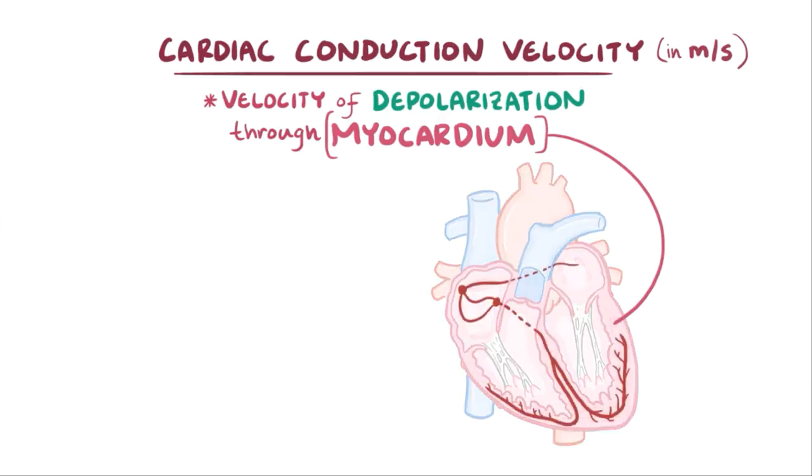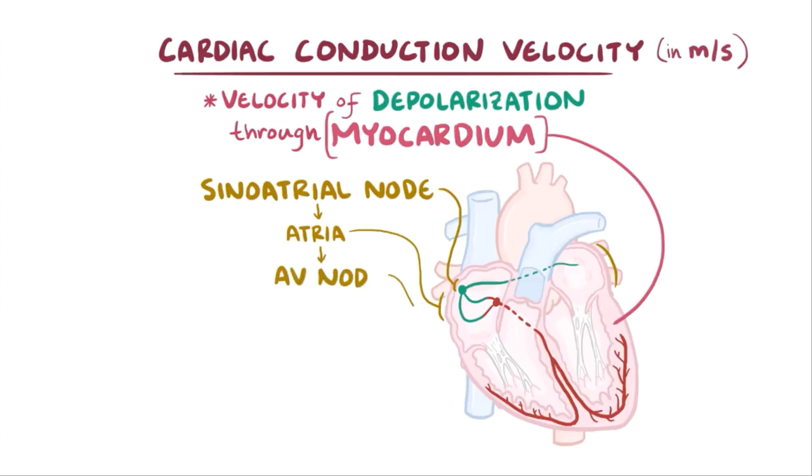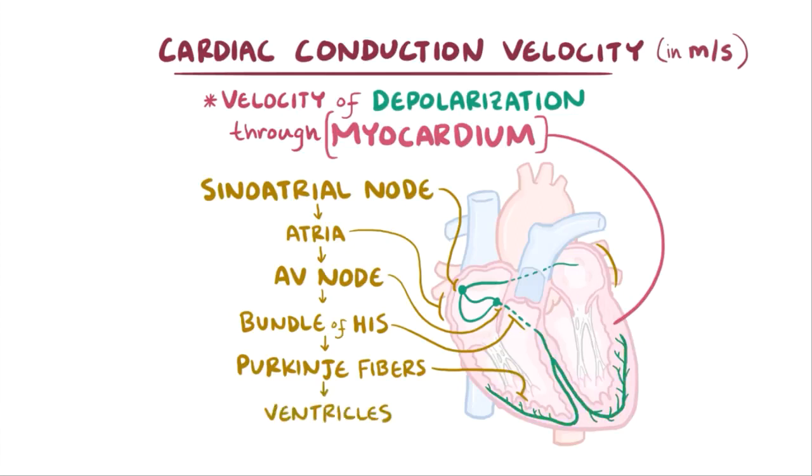The depolarization wave travels through the sinoatrial node or SA node, both atria, down the atrioventricular or AV node, through the bundle of His and the Purkinje fibers, and finally to all parts of the ventricles, all in about 220 milliseconds, which is less than a quarter of a second.